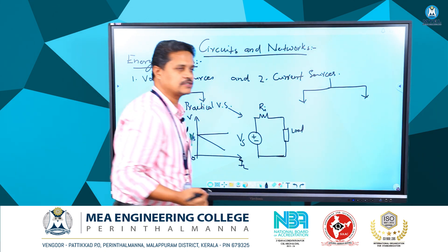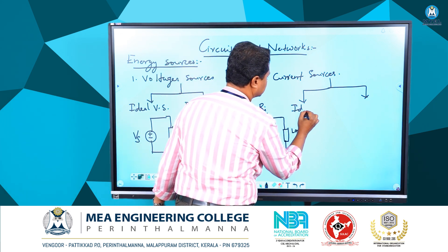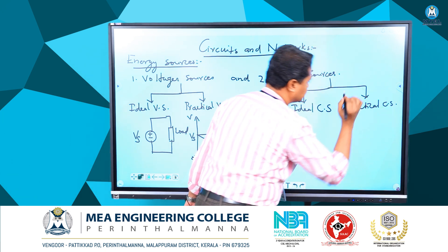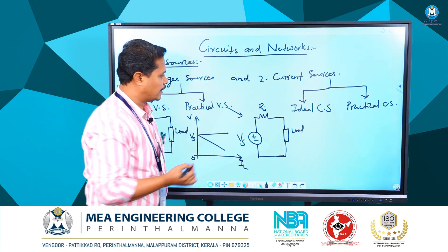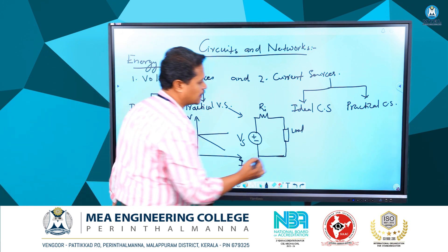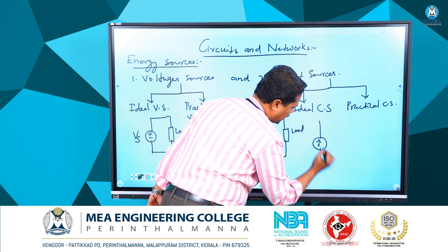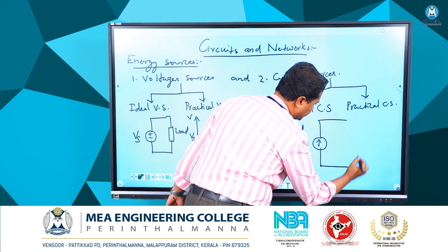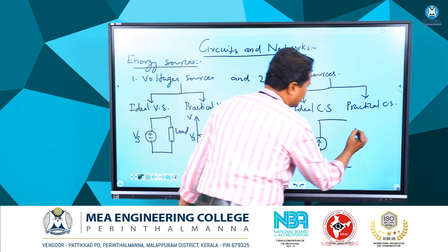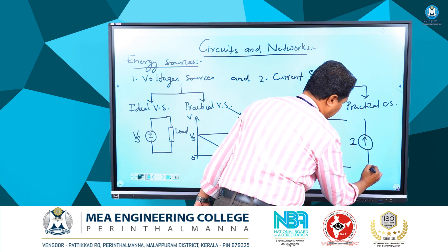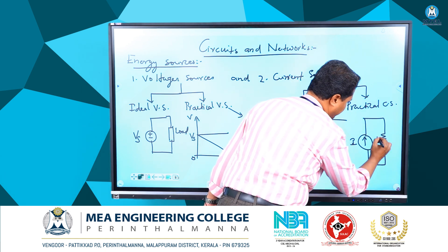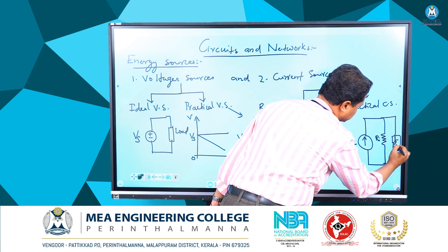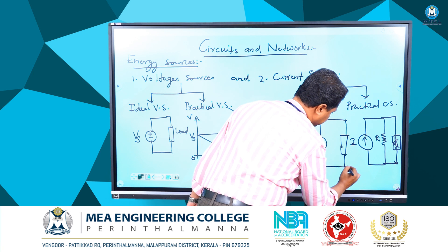Current sources are also classified into two: ideal current source and practical current source. In an ideal current source, same as in a voltage source, there will be no internal resistance. The ideal current source representation has a current I with no internal resistance connected. For a practical current source, we have a current source with its internal resistance or impedance in parallel with it, and then we connect the load.